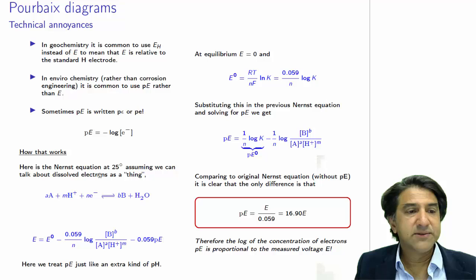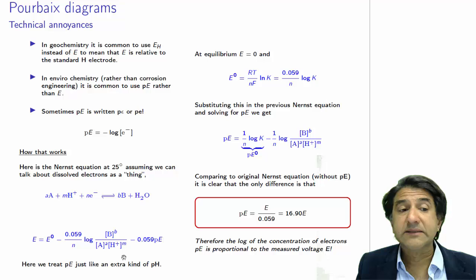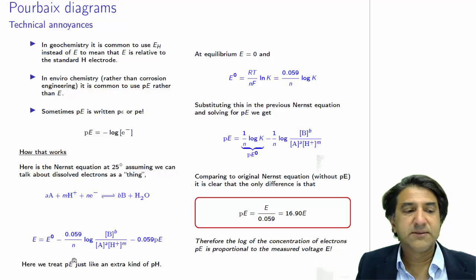Here's how it works. Here's the Nernst equation at 25 degrees C. We've seen this before, m hydrogens, n electrons, etc. And here I have written down the Nernst equation, taking into account the electron concentration. Previously, we didn't. We didn't take into account this concentration. So if we take into account the electron concentration, we get E equals E0 minus 0.059 on N times log.